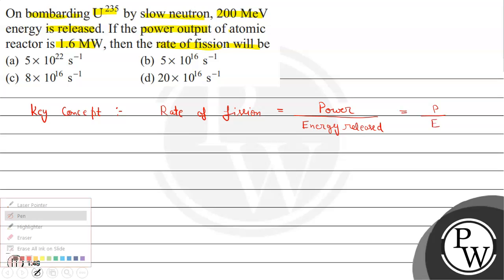We have to tell the value, so we have to put all values which are given in question. So rate of fission from here equals...